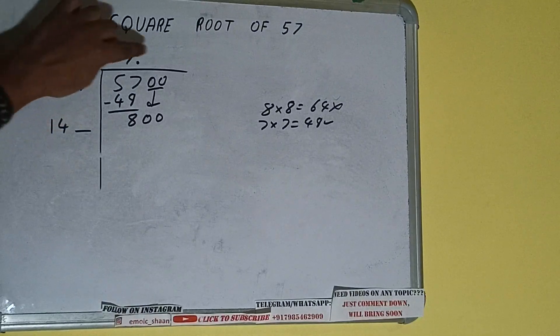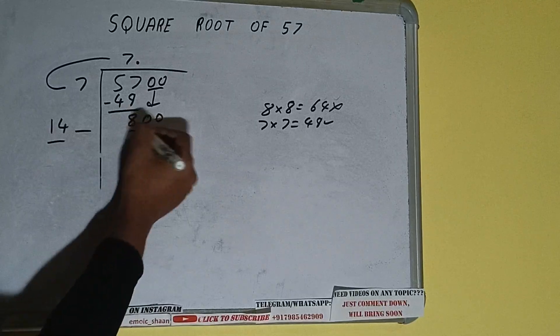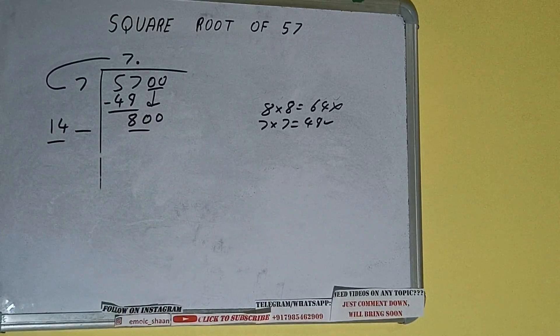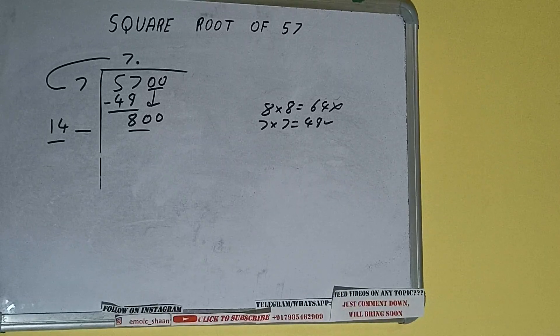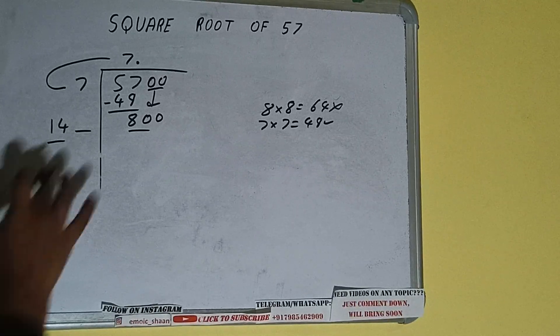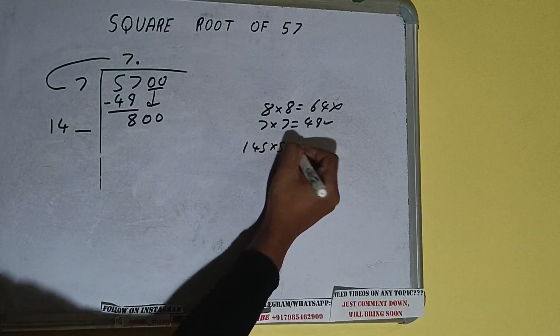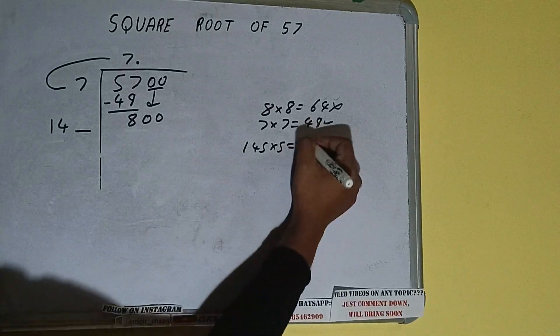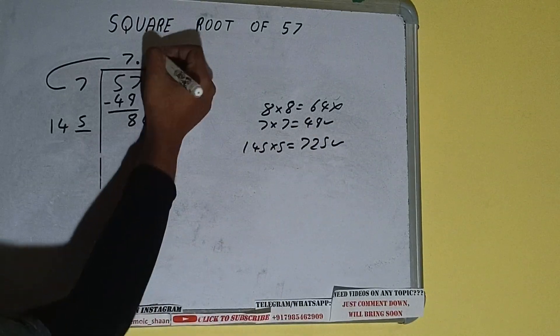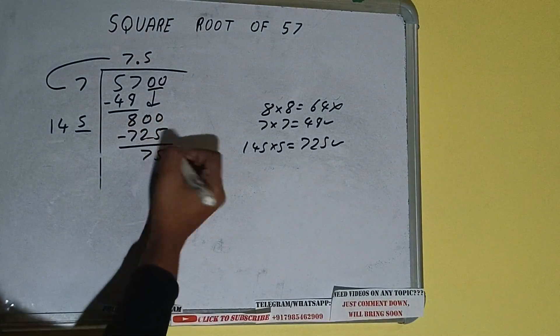Now whatever number we write here, we have to write here also. So we can compare this 14 with this 80. 14 times 5 is 70, right? So we can try 5 times: 145 into 5 we can try, and we'll be having 725, which is good to take. So 5 here and 5 here, 725, subtract, 75 will be left.